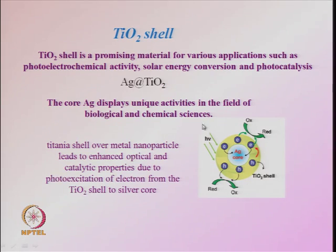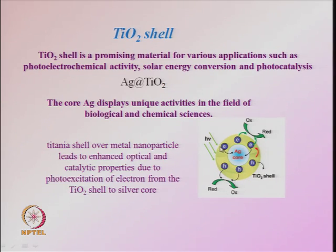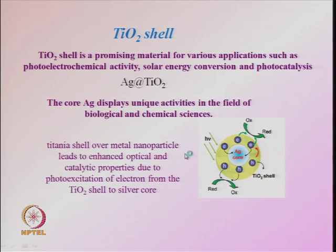When light falls on this silver-core/TiO2-shell structure, it generates electrons and holes. The electrons migrate from the titania shell towards the silver core, separating electron and hole — a very important aspect of photocatalytic reactions and photovoltaics. This kind of core-shell nanostructure is very useful in that regard.